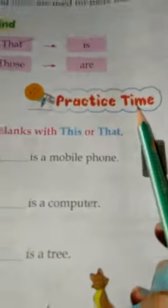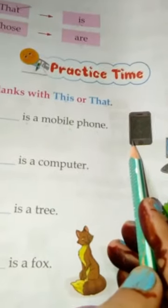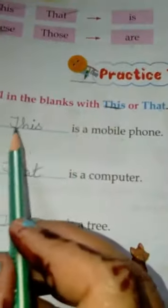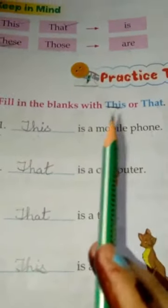Now let us do the practice time, my dear kids. Fill in the blanks with 'this' or 'that.' First one: dash is a mobile phone. This mobile phone is near, and it is one — so for near, one, we will use 'this.' This is a mobile phone. You have to learn the spellings: THIS and THAT, these and those.